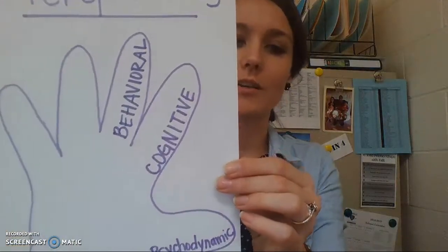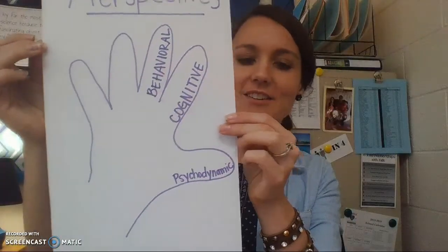The third perspective to write on your hand is behavioral — on the middle finger. The behavioral perspective is the idea that psychologists focus on learned behaviors. If you think of holding your middle finger up at someone, that's a learned behavior — you've learned to do that through observing someone. They modeled that for you, and so now when you're angry, you do that. Behavioral psychologists focus on learned behaviors, things that you can observe.